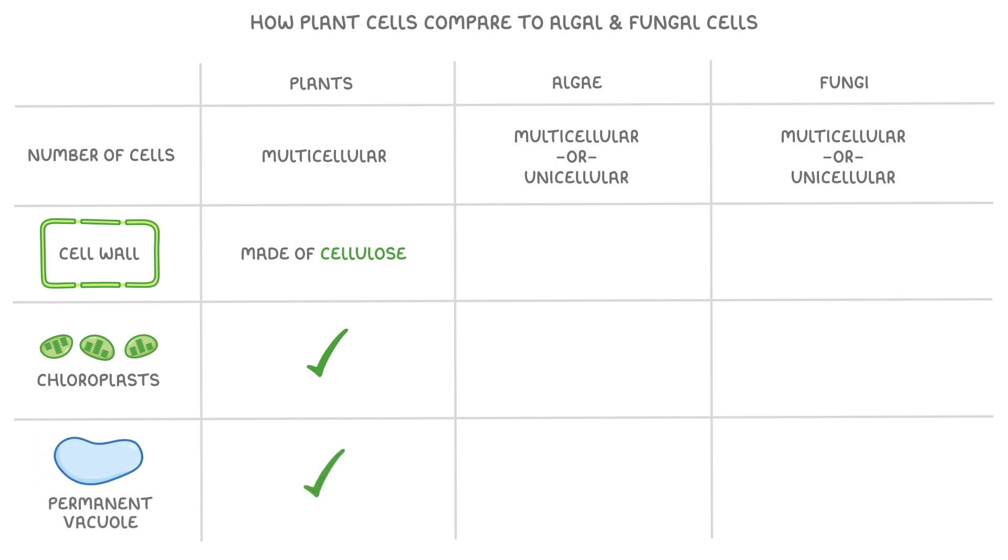Now like plant cells, algal cells also have a cell wall, which is sometimes made just of cellulose, but sometimes also contains glycoproteins as well as, or instead of, cellulose. Algae also have chloroplasts, but they're a different shape from those in plant cells, and algal cells have a permanent vacuole as well.